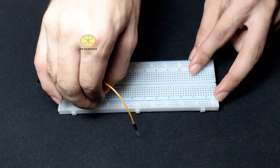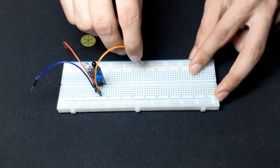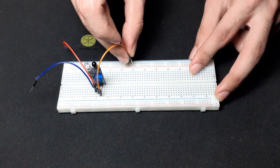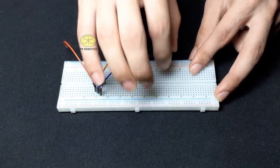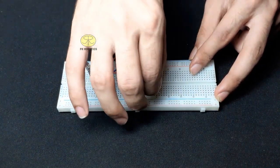Now connect VCC pin to the positive rail and ground pin to negative rail and out pin to any rail.